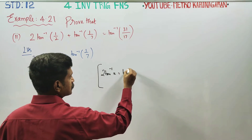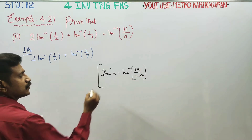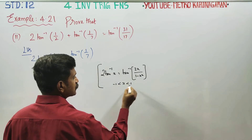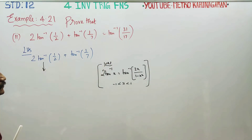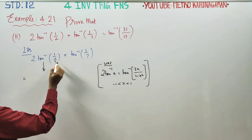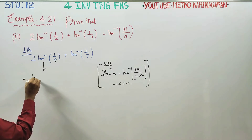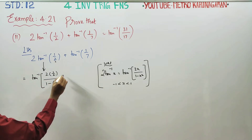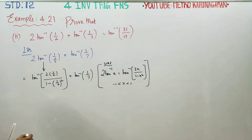Using the formula 2·tan⁻¹(x) = tan⁻¹(2x / (1 - x²)), substituting x = 1/2, we get tan⁻¹ of (2·(1/2)) divided by (1 - (1/2)²), which gives tan⁻¹(1 / (1 - 1/4)), plus tan⁻¹(1/7).